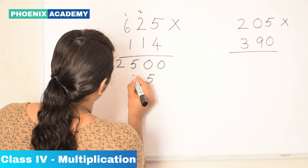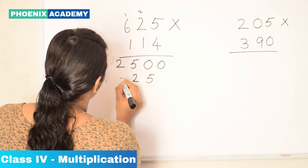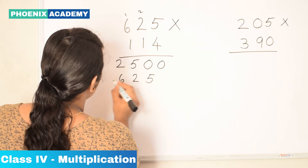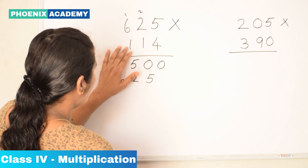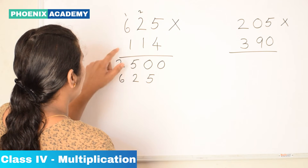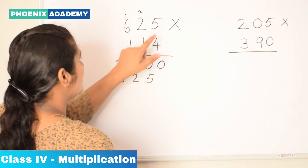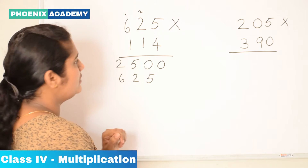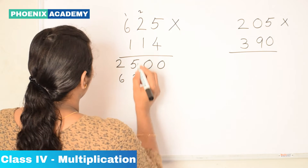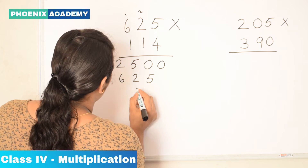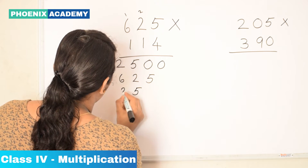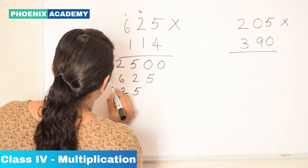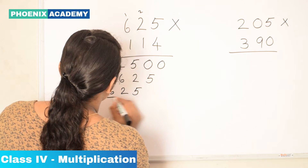Then again we are multiplying 1 with 625, so we write 625 as the partial product again.